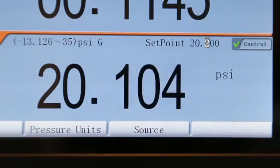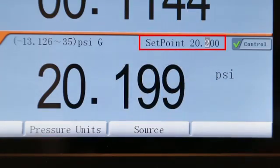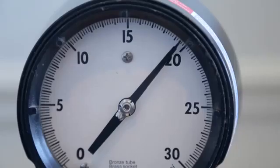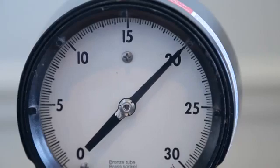For calibration of analog dial pressure gauges, Additel has included a jog pressure feature that allows you to make small changes to the controlled pressure manually so the needle can be set right on an increment. Simply use the right or left arrow keys to raise or lower the pressure to the desired level.